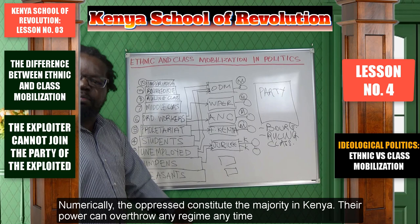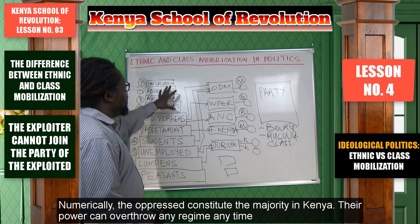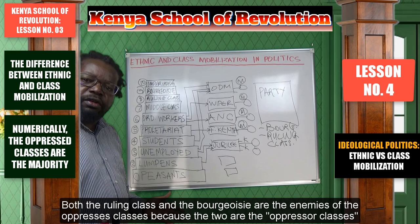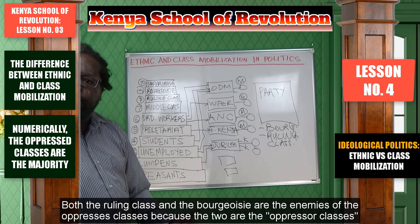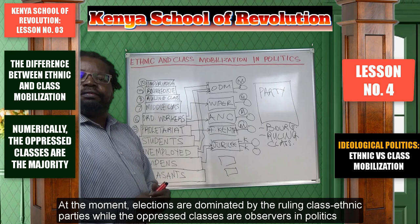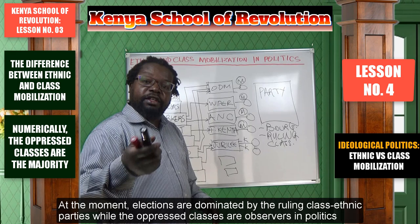But in the socialist camp, we don't just talk about the people — we talk about which people: the working people, the unemployed people. We don't just say 'the people' because the ruling class and the bourgeoisie are also the people, and they are the enemies of society under capitalism — the ones who conspire to exploit these classes. The difference in mobilization is that ethnic parties mobilize from the exploited classes on an ethnic perspective, while a class party mobilizes from these same classes on a class perspective. Then they go to an election, and if the election is democratic, these guys take over power.